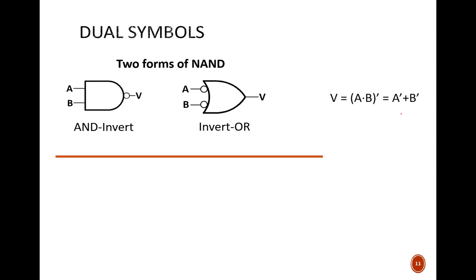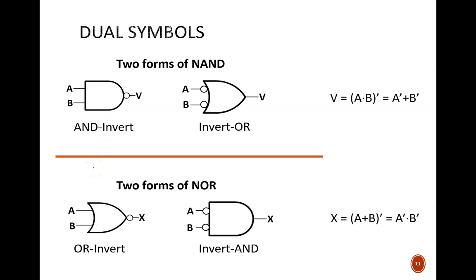So, in any circuit, these gate representations can be used interchangeably. There is a similar dual symbol for NOR logic. On the left is our typical representation, the OR invert gate. On the right is the equivalent alternative, the invert AND gate. Again, we can prove their equivalence with De Morgan's theorem.